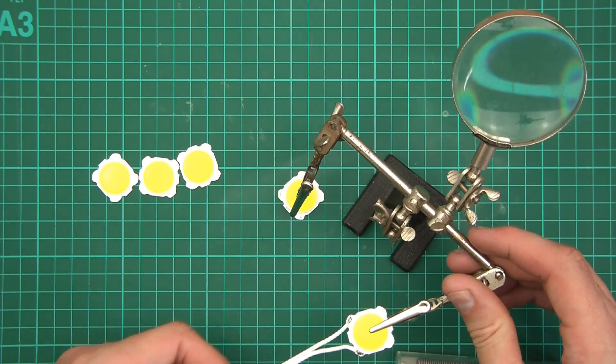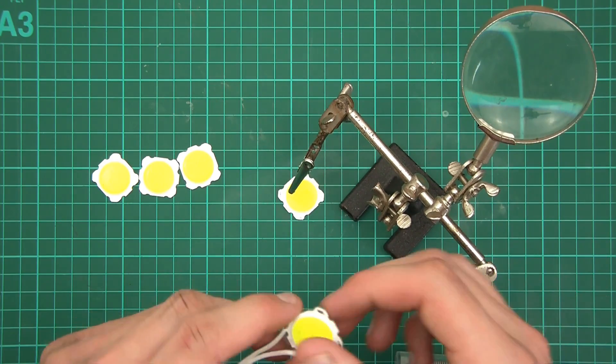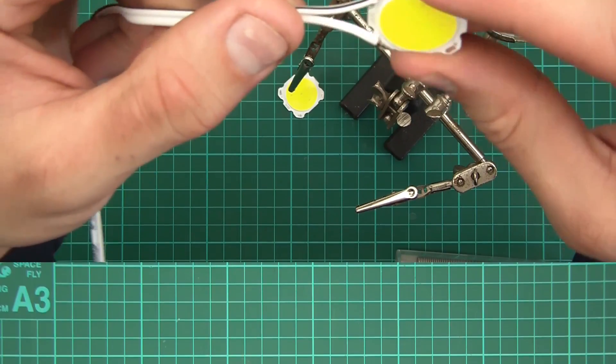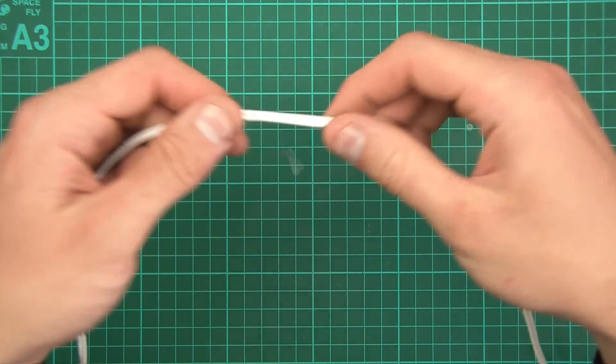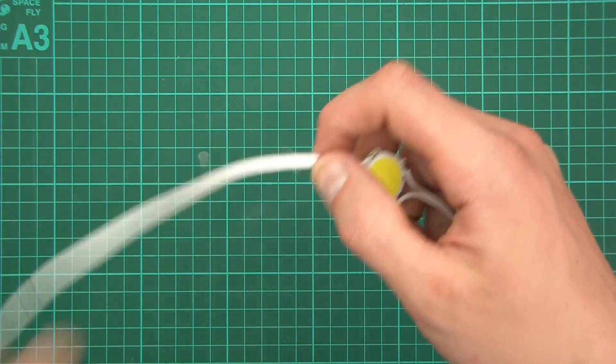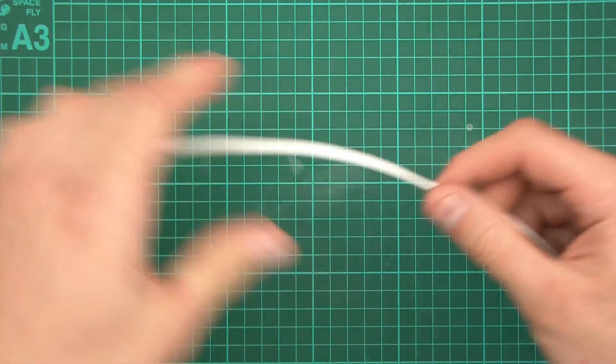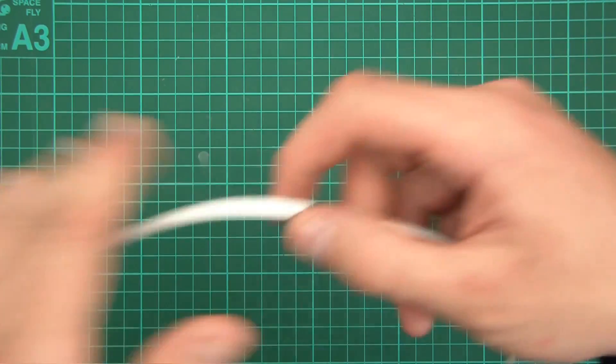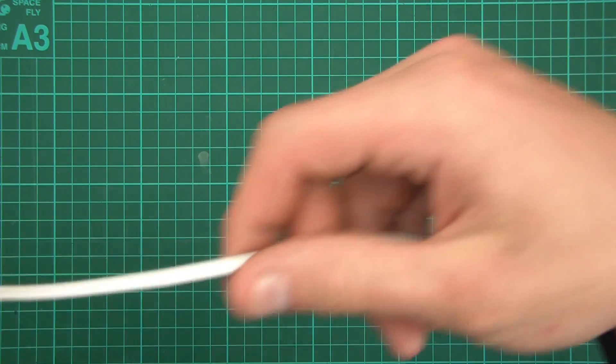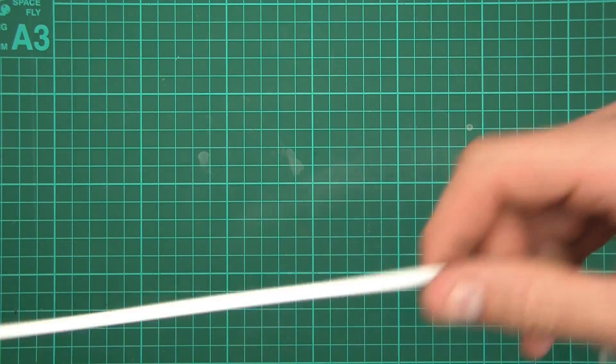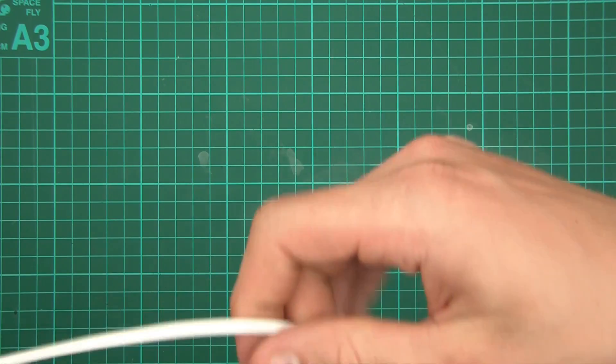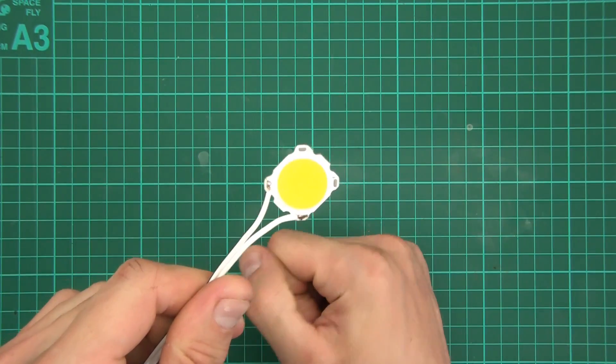So there's the first one done. So these are going to be in parallel, so all the minuses are going to go together and all the pluses will go together. Okay, so I've done it. On this side I've got loads of wire and on this side I've got an LED, and another LED, and then another LED, then another LED, and the last LED.